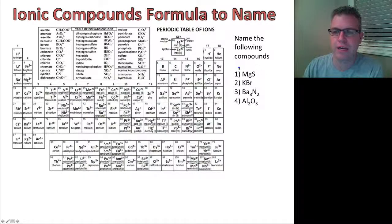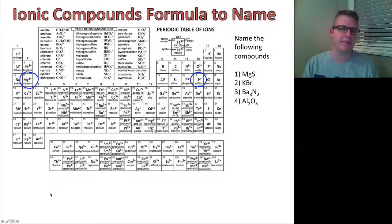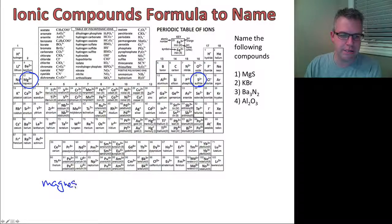So the very first one is MgS. What I need to do is on my periodic table of ions, I'm going to find magnesium. Magnesium is over here. I'm going to look for S. That is sulfide. The simplest thing to do, we don't name with our cation. I know that's magnesium ion on its own, but we drop that. We're just going to name this magnesium sulfide. Very simple. That's the first one.